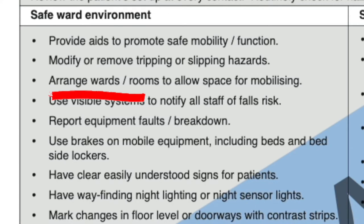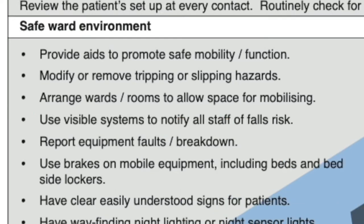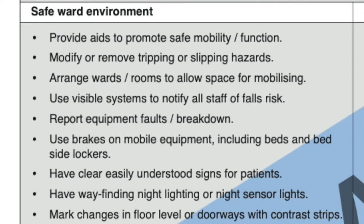Arrange the ward or room to allow space for mobilizing — always make sure you're not cluttering the room too much, as that minimizes the space for your patient to walk around. Use visible systems to notify all staff of fall risk; some areas use colored dots at the bedside — for example, four red dots indicating the patient is high risk of falls. Report equipment failures or breakdowns immediately and put an 'out of order' sign, then notify your manager so it can be fixed. Use brakes on mobile equipment including beds and bedside lockers — always check that brakes are applied when a patient returns to the ward.